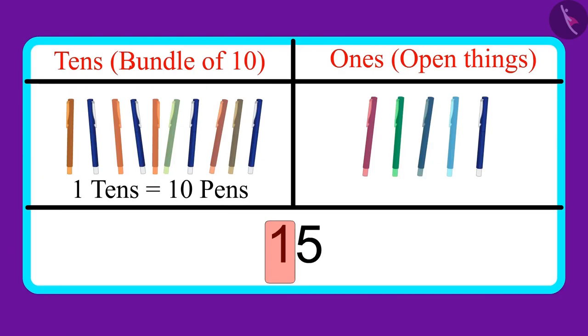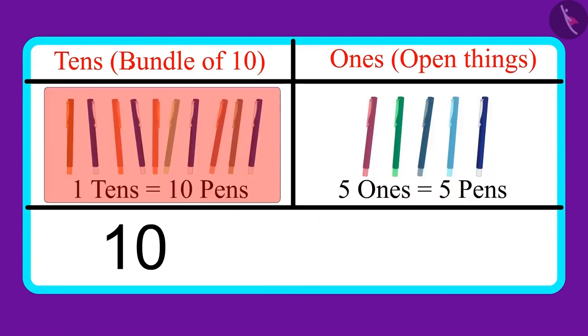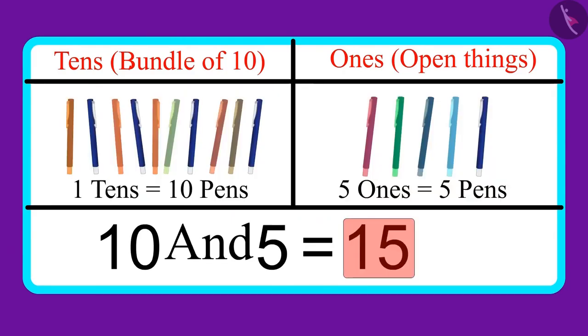One tens means ten pens, and five ones means five pens. That means I have ten and five, fifteen pens. Did you understand? Oh yes Chotu!